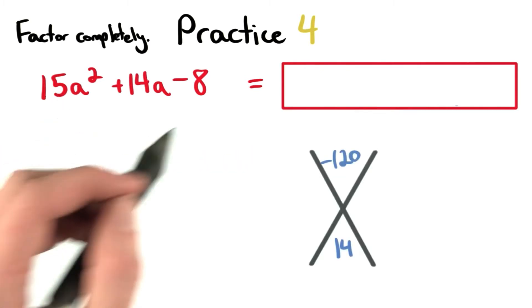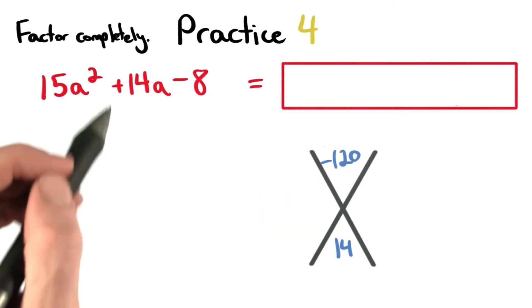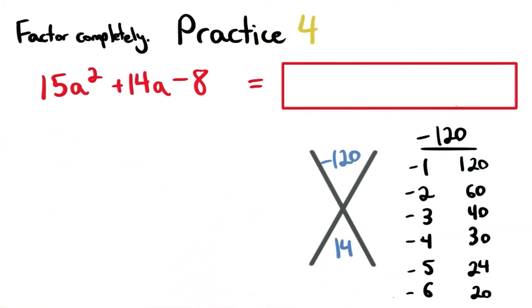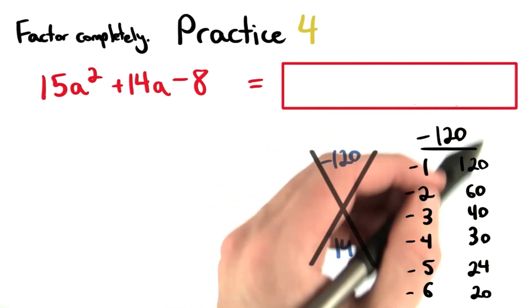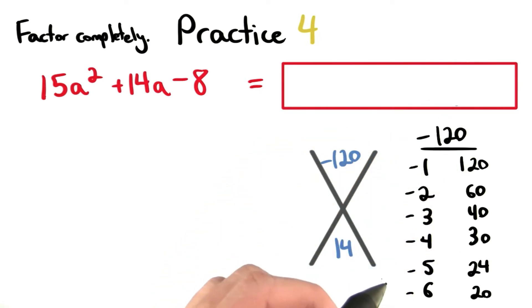We want to find factors of negative 120 that sum to positive 14. Here's the start of a factor pair list. There are other factors for negative 120, but I've already found the one I need, negative 6 and positive 20.